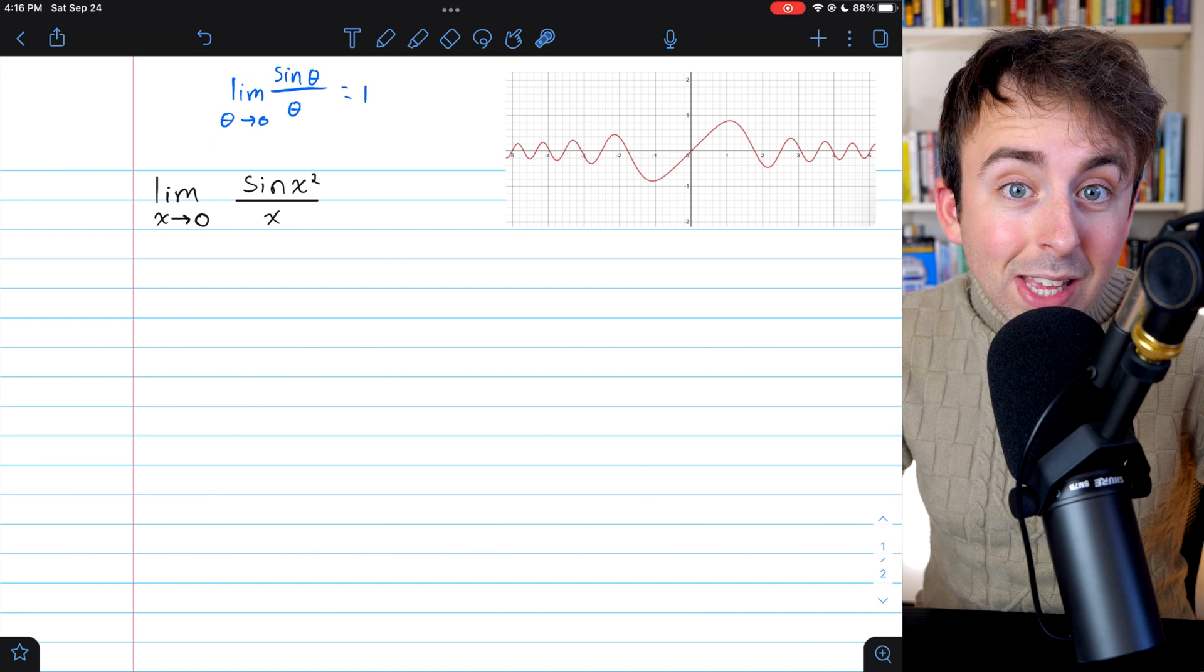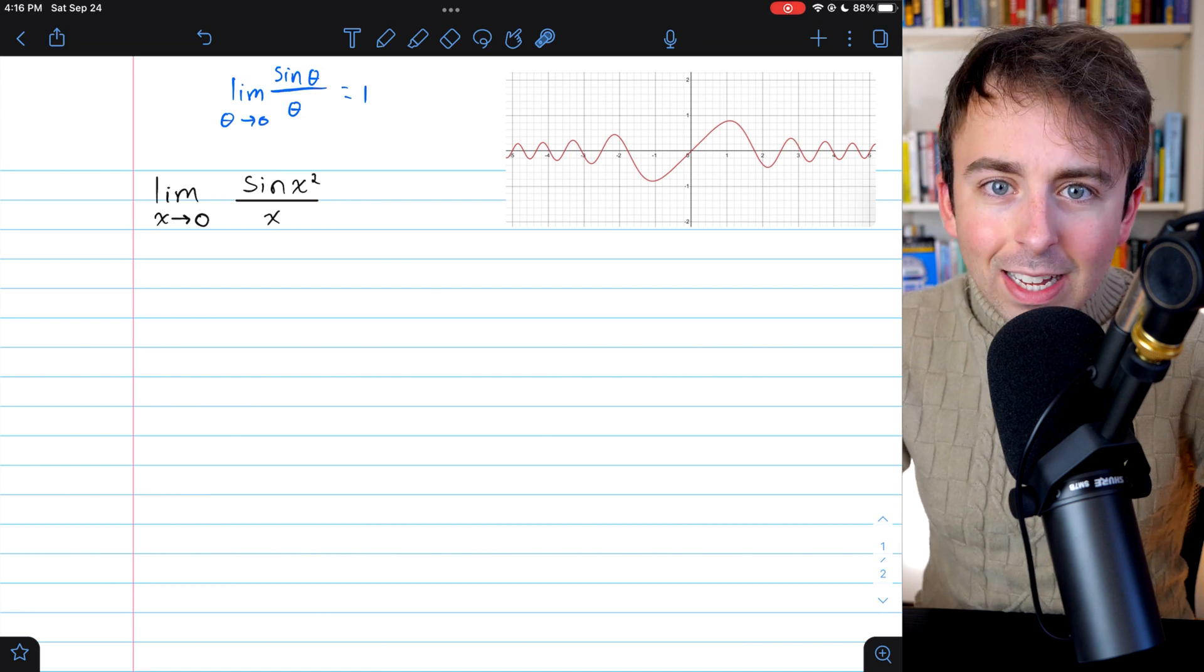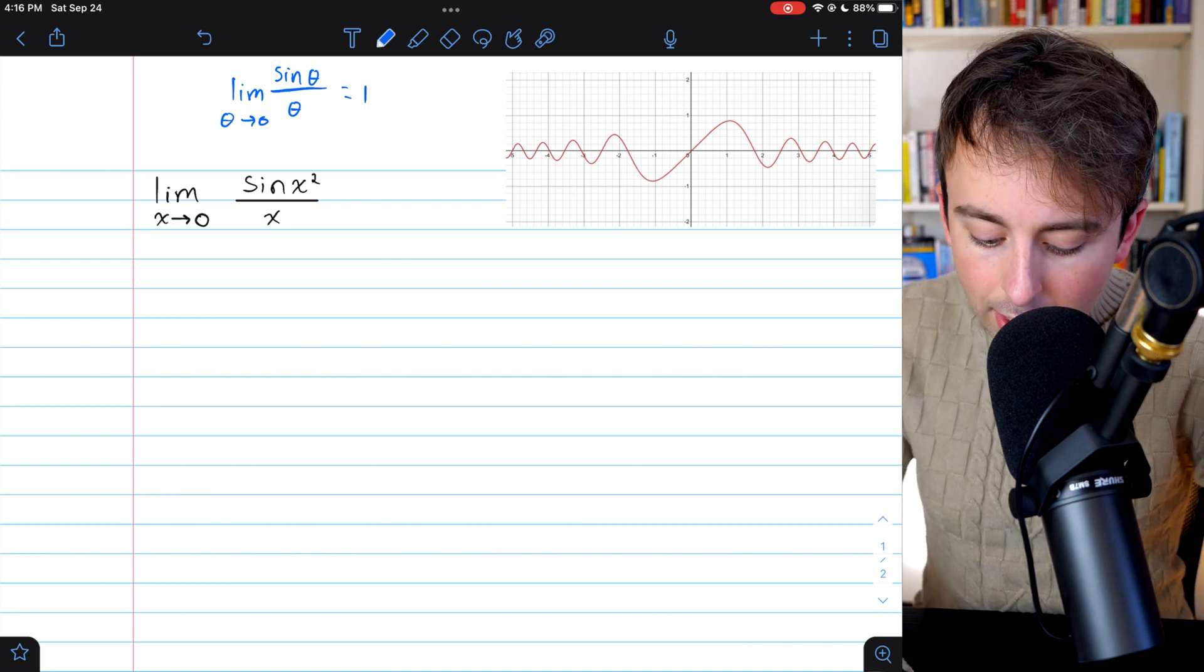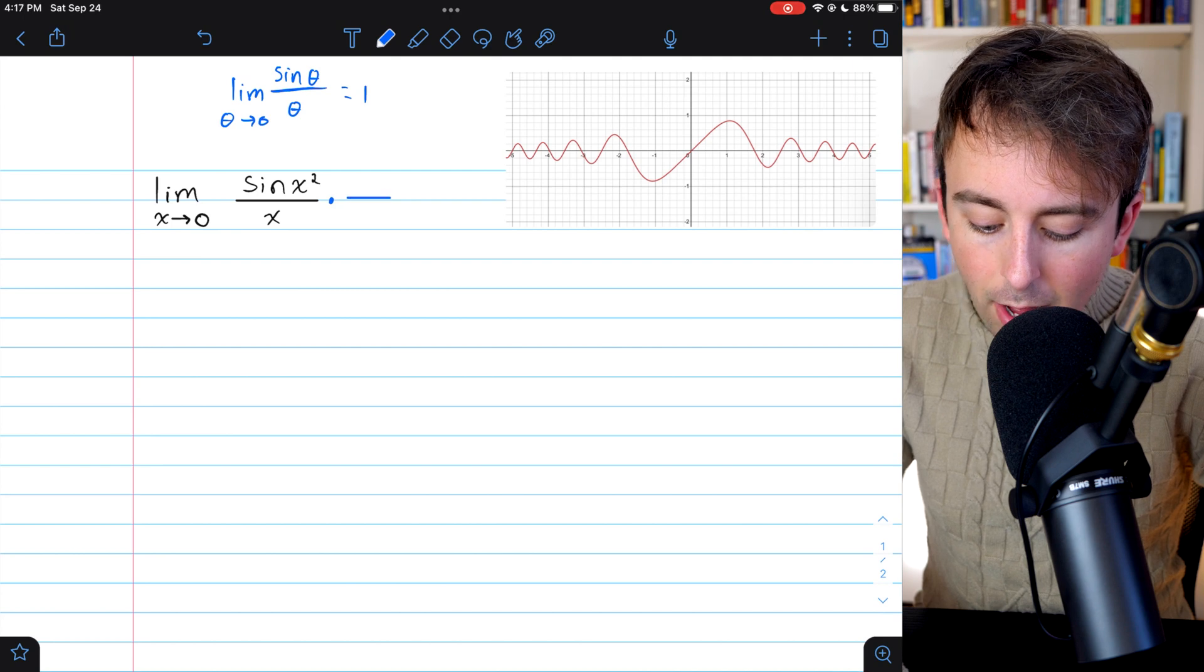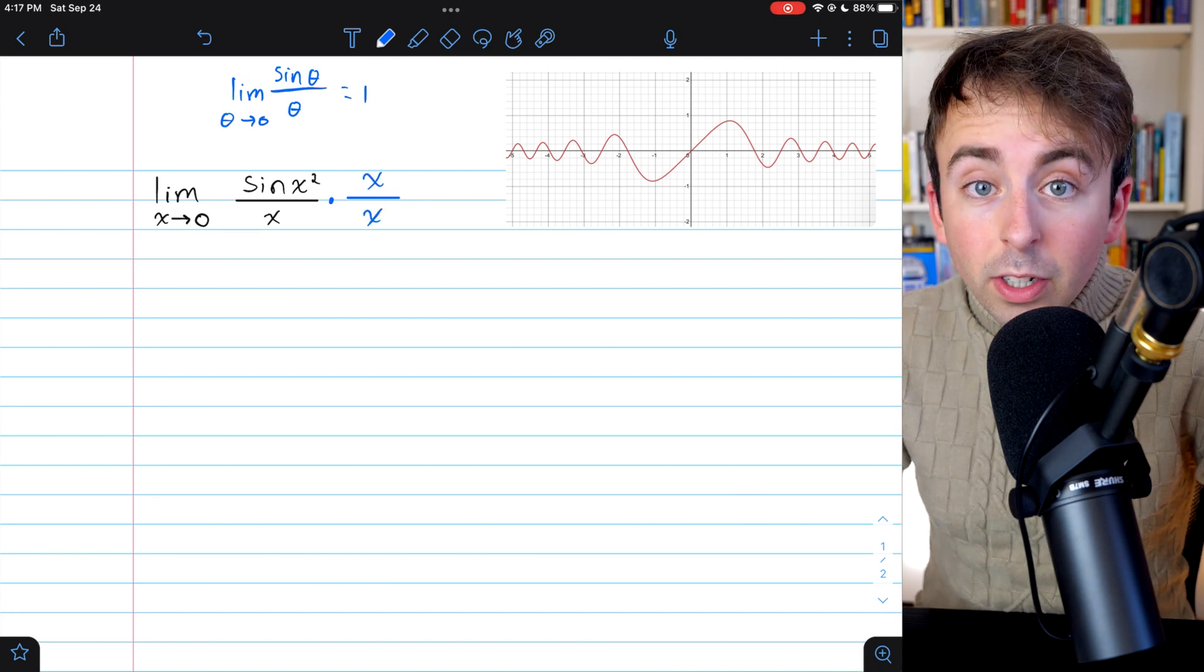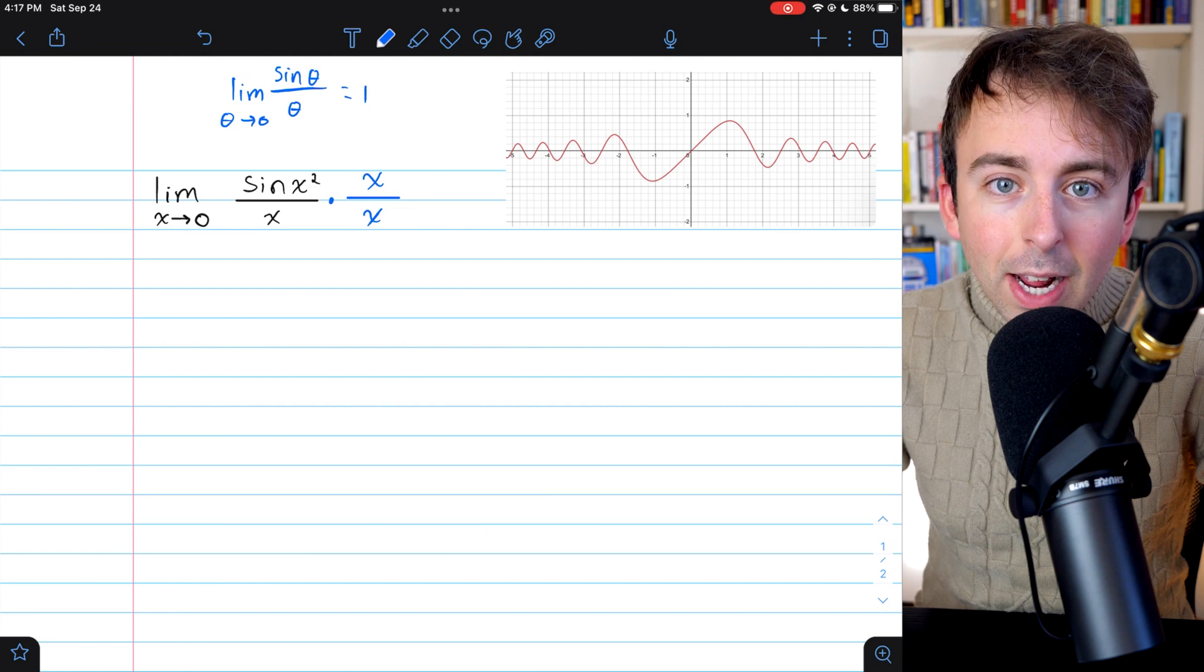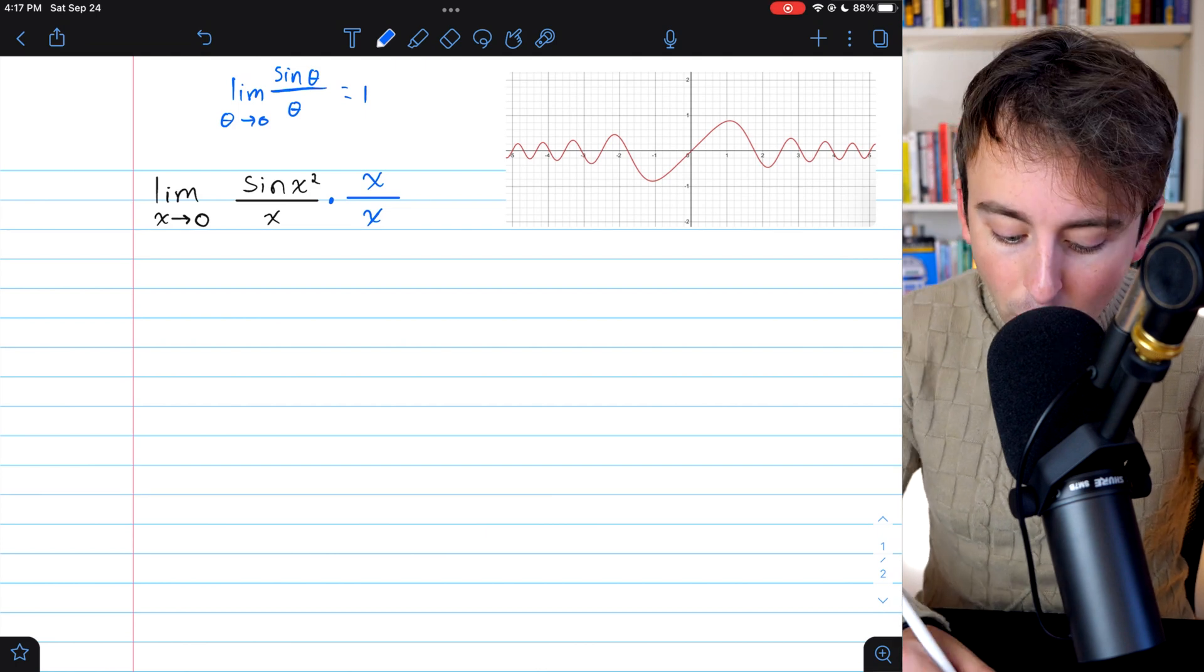But with a little bit of work, we can make that x squared in the denominator. All we have to do is multiply this thing by x over x. That's going to put x squared in the denominator, and hopefully the rest will work out.